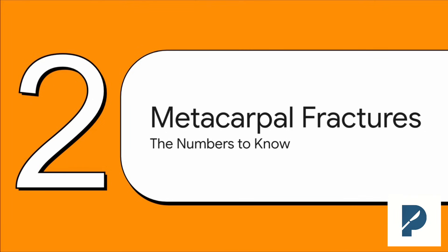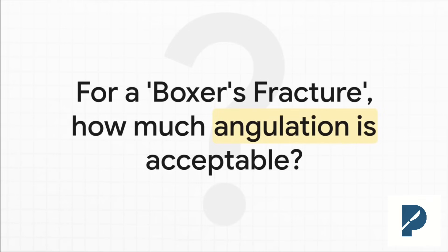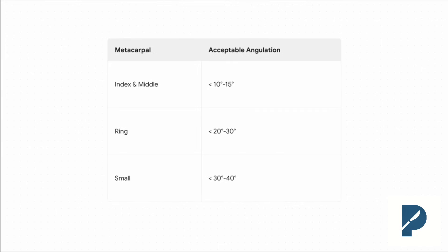Let's put this framework into practice with metacarpal fractures. You've got to know your numbers. Let's talk about the classic boxer's fracture of the fifth metacarpal neck — bread and butter for the ER and a board exam favorite. The big question is always: how much angulation can we actually accept? And here's the kicker — the answer is totally different depending on which finger is involved. For the index and middle fingers, you have very little wiggle room: 10 to 15 degrees max. For the ring finger, you can accept 20 to 30. And for the small finger, you can get away with up to 30 or even 40 degrees. This is super high yield for exams.